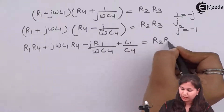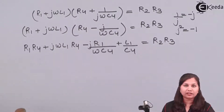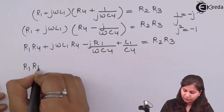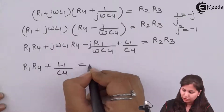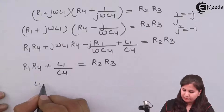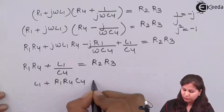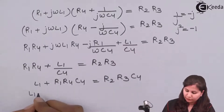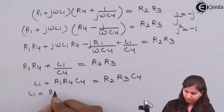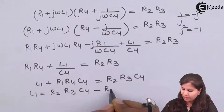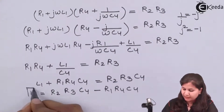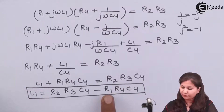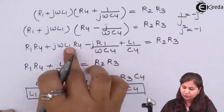Equating real parts: R1·R4 + L1/C4 = R2·R3, which gives L1 + R1·R4·C4 = R2·R3·C4, so L1 = R2·R3·C4 − R1·R4·C4. Since this expression for L1 still contains R1, we must first calculate R1 by equating the imaginary parts, which gives jωL1·R4 − j·R1/(ωC4) = 0.